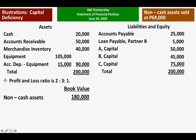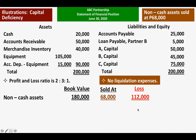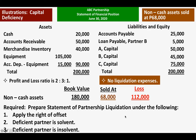Assuming that these non-cash assets were sold at 68,000, we will have a loss of 112,000. We are going to distribute this loss. ABC Partnership incurred no liquidation expenses. We are going to prepare the statement of partnership liquidation with the following assumptions: first, we will apply the right of offset; second, the deficient partner is solvent; and third, the deficient partner is insolvent.